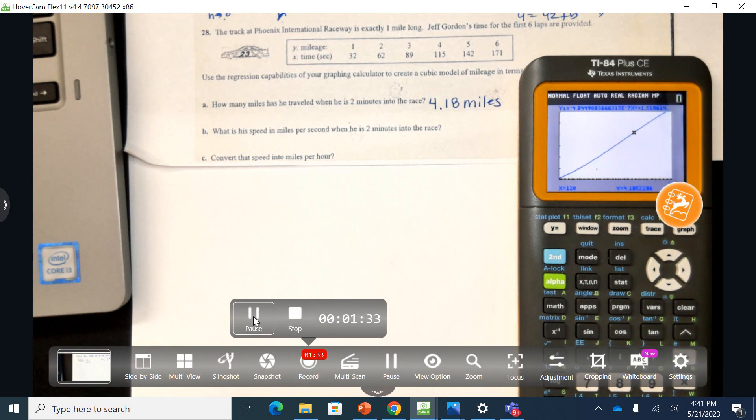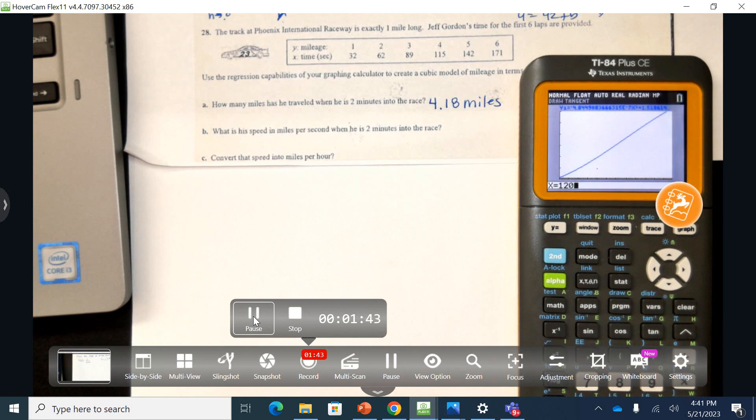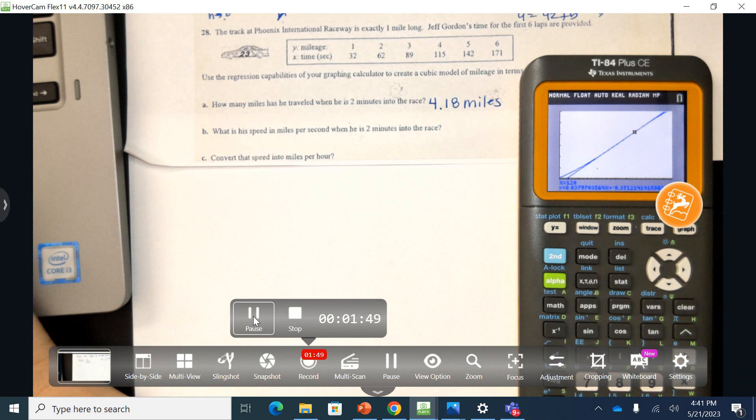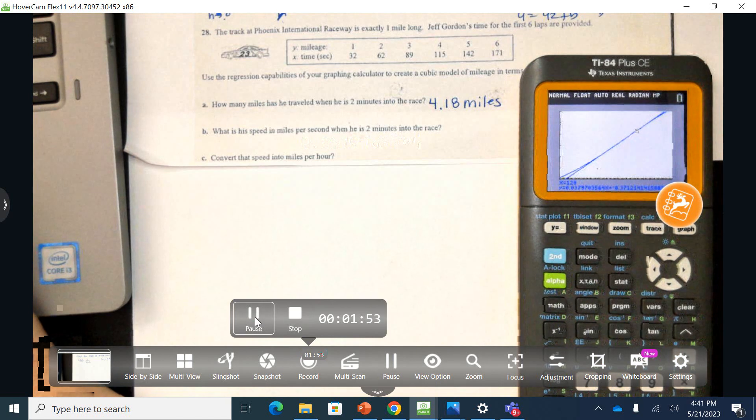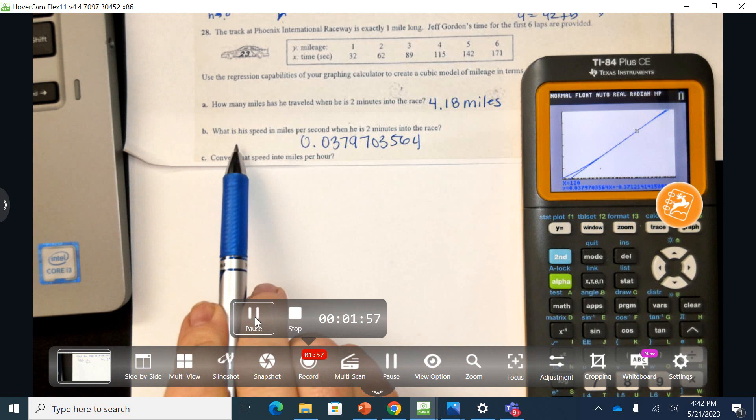Next, we want to know the instantaneous speed when he is 2 minutes into the race. So I'm going to do 2nd, draw, and I want to draw a tangent line when the X value is 120. And the slope is what I'm going to write down. Okay, now we're going to convert this. So this is speed, and we're going to convert this now.